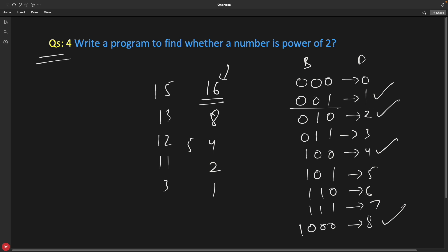If you notice one thing, there's a common pattern: if your number is power of 2, then you have only one set bit in your binary representation. See, we have only one set bit here, one set bit here, one set bit here.